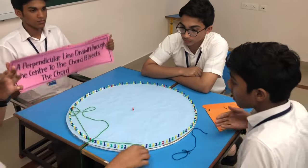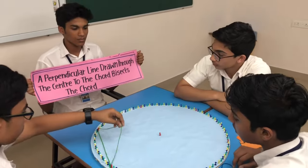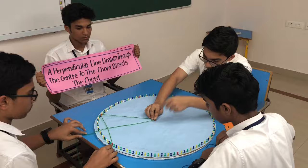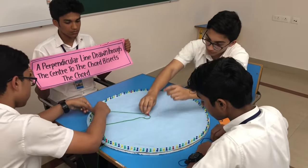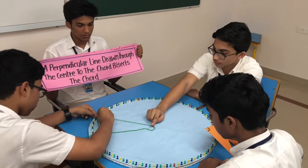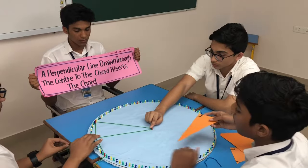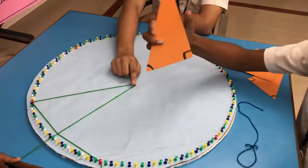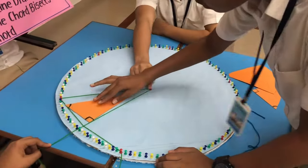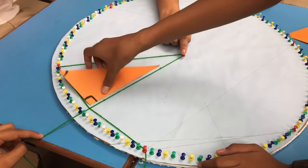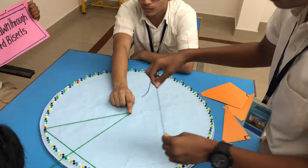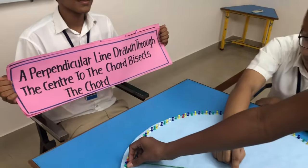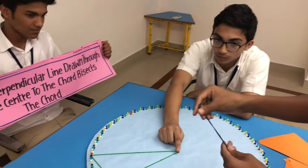The second theorem: a perpendicular line drawn from the centre to the chord bisects the chord. Let us see if this line is perpendicular or not. You can see that this is a right angle — so it is perpendicular. Now let us check the measurement. This is the chord, and the theorem states that the perpendicular line bisects the chord, meaning it divides it into two equal parts.